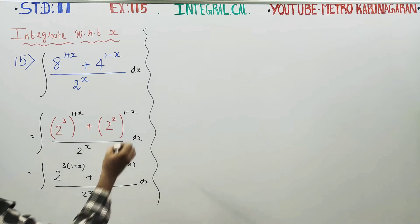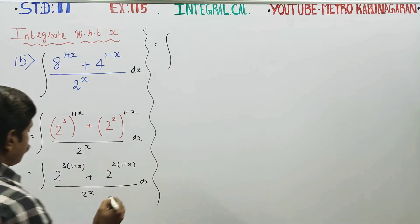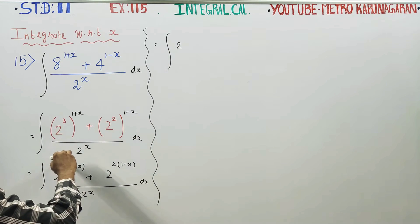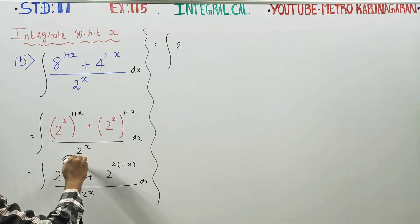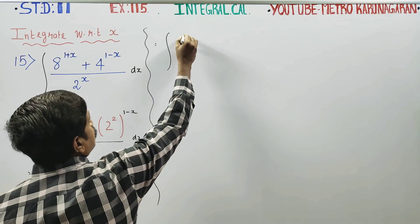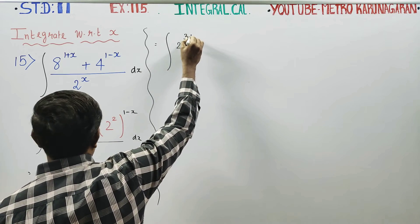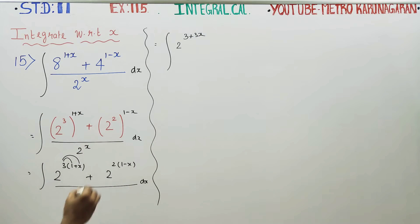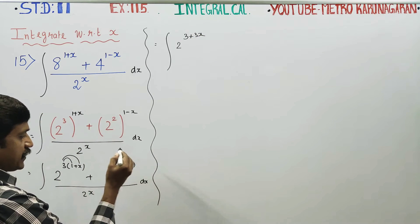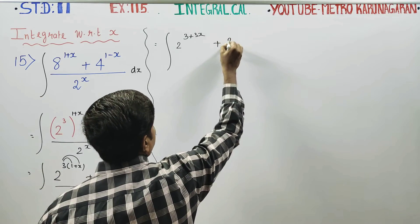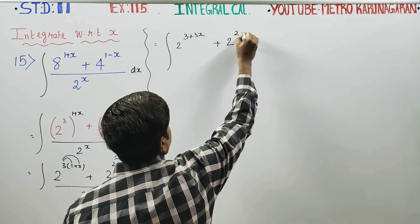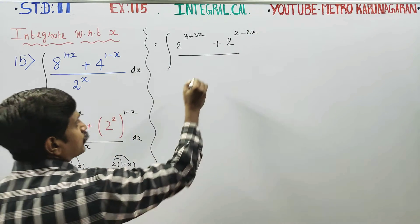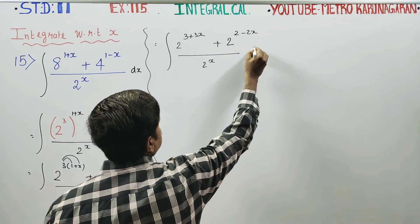The next stage: integration of 2 power (3 plus 3x) — since 3 ones are 3 and 3 into x is 3x — plus 2 power (2 minus 2x), all divided by 2 power x, dx.